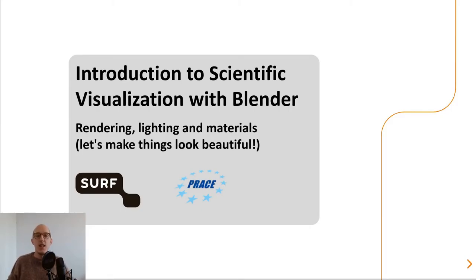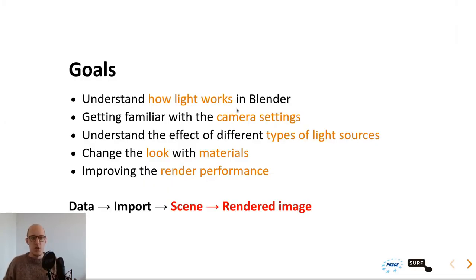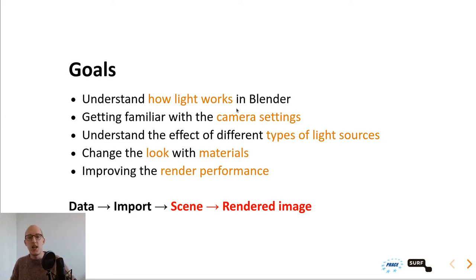We are at the rendering, lighting, and materials section — making stuff beautiful. The goals of this section are: to understand how light works in Blender, because it doesn't work the same way as in real life; getting familiar with camera settings; understanding the effect of different types of light sources; changing the look of your image with materials; and improving your render performance.